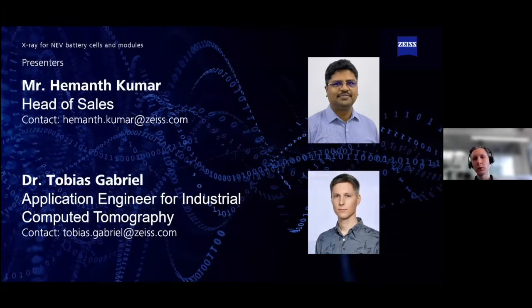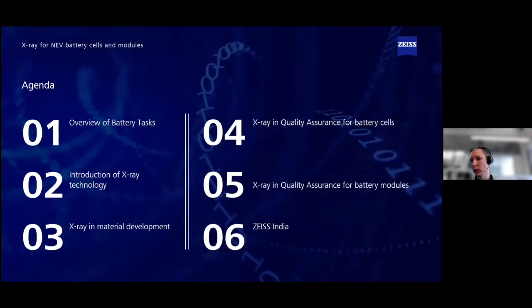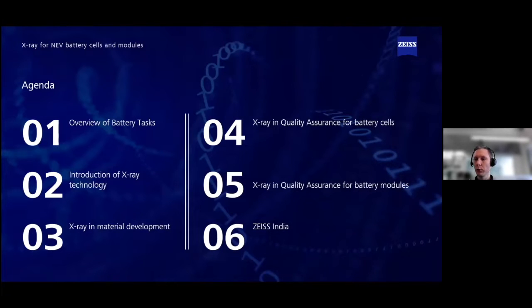I will begin with the first part of the presentation and then hand over to Hermann Kuma, who will present some information about Carl Zeiss India. That's the agenda for today. We'll start with a very short overview of battery tasks and a one-slide introduction of the X-ray technology as basic background, then go over to X-ray technology for material development, quality assurance for battery cells, quality assurance for battery modules, and in chapter six, we'll show you what's possible at Carl Zeiss India.